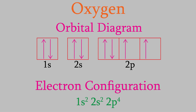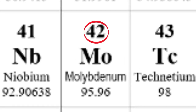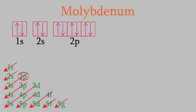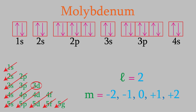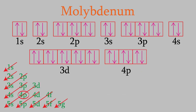Now let's draw the orbital diagram and electron configuration for molybdenum, which has 42 electrons. We'll use the triangular diagram to help us. It shows we start with 1s, then 2s, then 2p, then 3s, 3p, 4s. After that come the 3d orbitals. A d orbital has l=2, so m can have five different values: −2, −1, 0, +1, and +2, meaning there are five different 3d orbitals — shown as five connected boxes in our orbital diagram. After the 3d orbitals come the 4p, then the 5s.